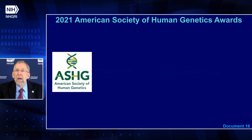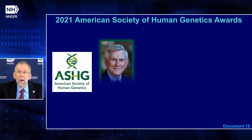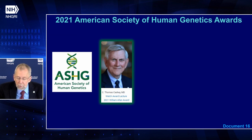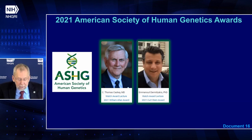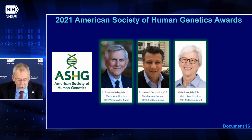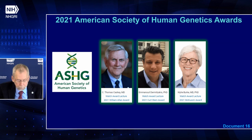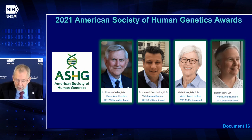Moving beyond those sad updates, the American Society of Human Genetics gave awards to four members of the genomics community at its 2021 annual meeting. Ironically, one included the late Thomas Caskey, who received the William Allan Award recognizing substantial and far-reaching scientific contributions to human genetics. Manolis Dermitzakis received the Kurt Stern Award. Wylie Burke received the Makusik Award recognizing exemplary leadership in advancing the ASHG mission. And Sharon Terry received the Advocacy Award, recognizing excellence in applications of human genetics for the common good.